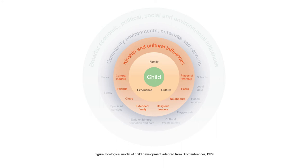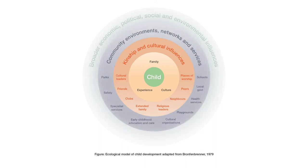Families and kinship members have primary influence on their child's health, learning, and development, shaping each child's sense of belonging, being, and becoming. You can also see how the model shows the network of community services and programs that support each child's health, learning, and development.